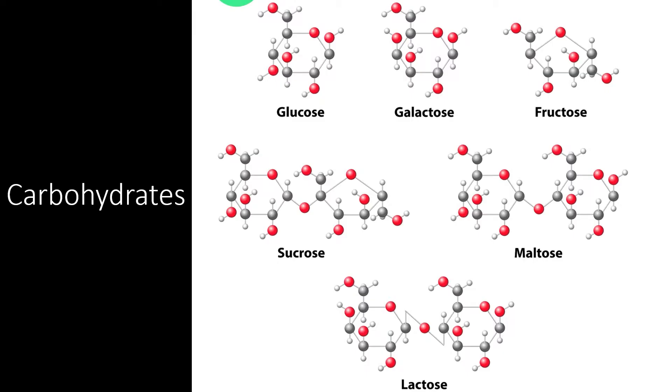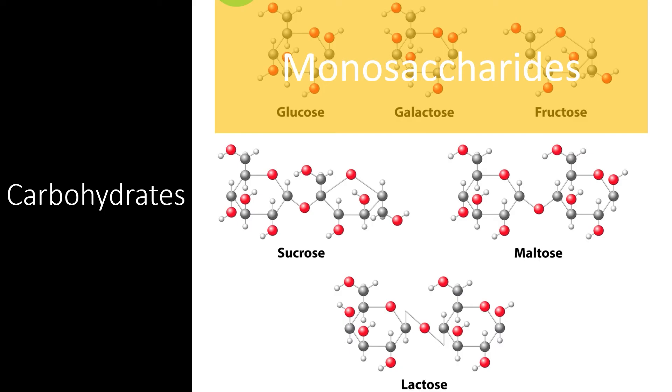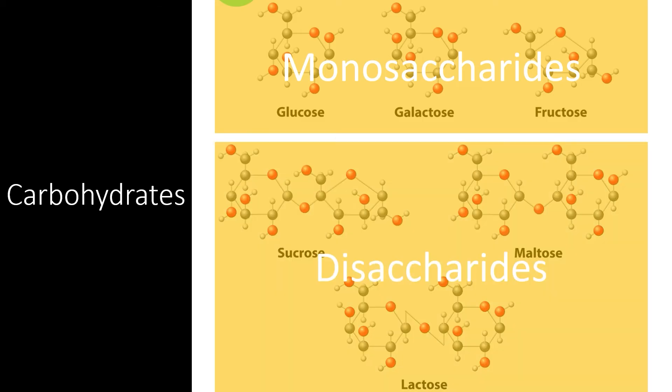Carbohydrate monomers are called monosaccharides. These include glucose, galactose, and fructose, and they store a lot of energy. They can be broken down by cells to create ATP. However, these molecules can also be combined into dimers known as disaccharides.